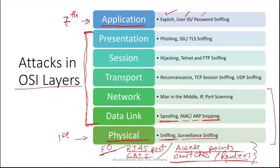At the network layer, the main attack is the man-in-the-middle attack. Eavesdroppers can collect your packets from the network, and IP or port scanning also happens here. At the transport layer, TCP session sniffing and UDP sniffing take place.